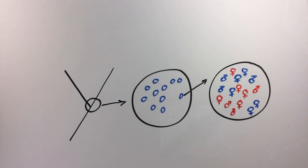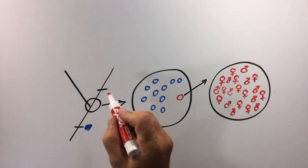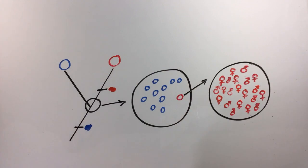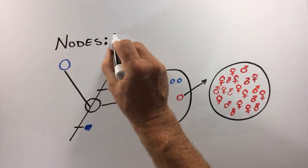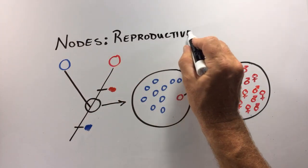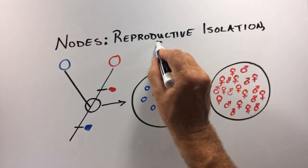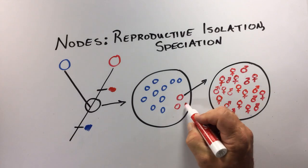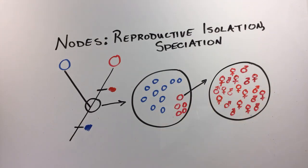Either due to conferring some survival advantage or completely random processes, the red trait becomes more common and ultimately becomes the only trait found in this population. If other changes occur so that red individuals are reproductively isolated and can no longer mate with blue individuals when they come into contact with them, this results in genetic separation of the blue and red individuals and lead to the evolution of a new species or speciation. So nodes represent reproductive isolation of lineages and ultimately speciation.